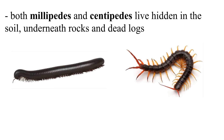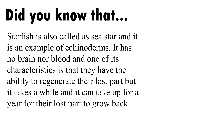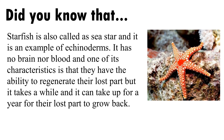Both millipedes and centipedes live hidden in the soil, underneath rocks, and in dead logs. Did you know that starfish is also called a sea star, and it is an example of echinoderms? It has no brain nor blood, and one of its characteristics is the ability to regenerate lost parts — though it can take up to a year for the lost part to grow back.